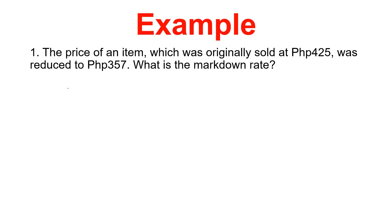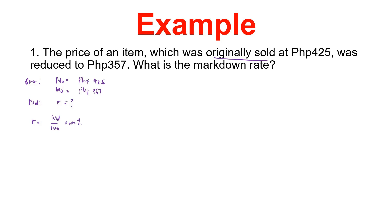Problem number one: the price of an item which was originally sold at 425 pesos was reduced to 357 pesos. What is the markdown rate? So let's list down our given. 425 pesos — since it says 'originally sold,' that is your cost price. It was reduced to 357 pesos, which is your selling price. We are looking for the rate of the markdown. The formula for the rate of the markdown is: markdown over cost price times 100 percent.